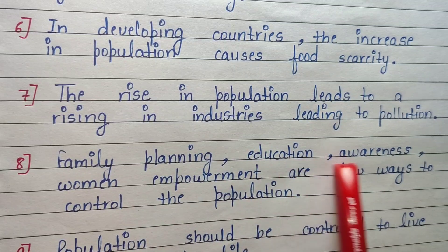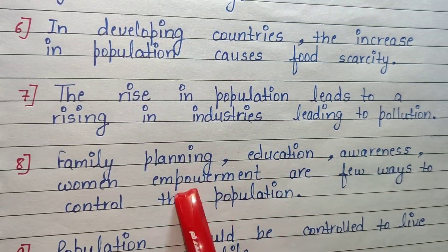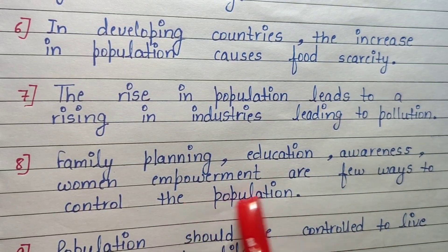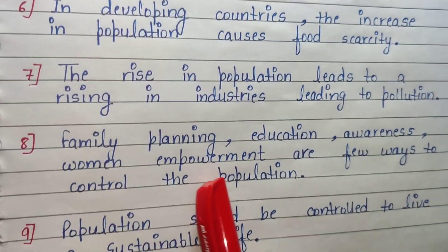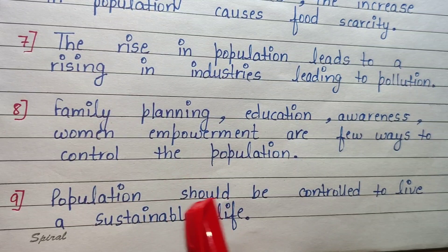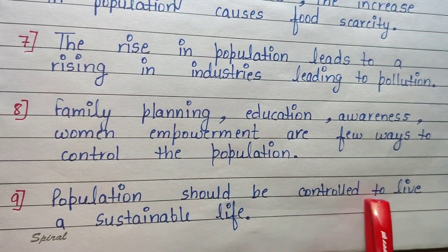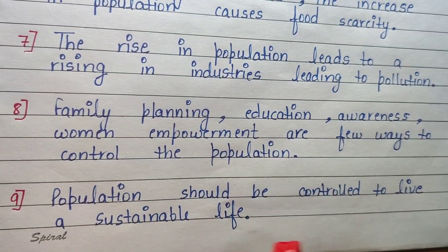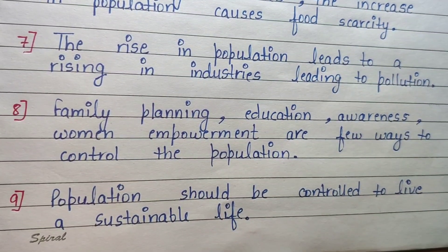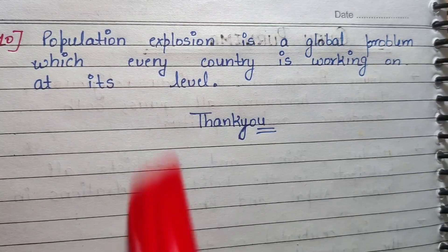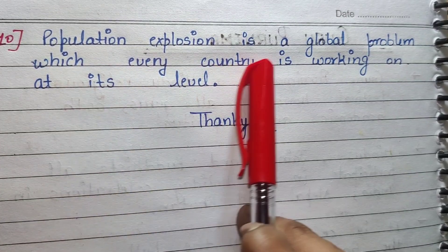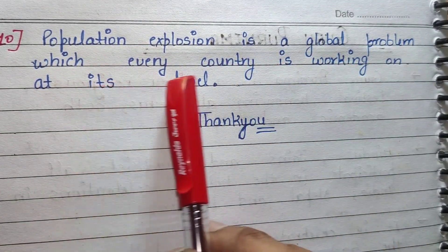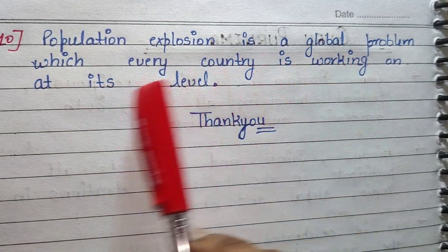Family planning, education, awareness, and women empowerment are a few ways to control the population. Population should be controlled to live a sustainable life. Population explosion is a global problem which every country is working on at its level.